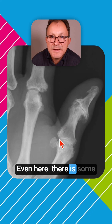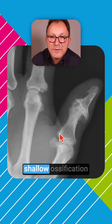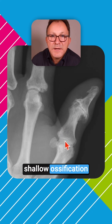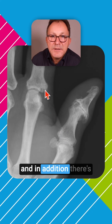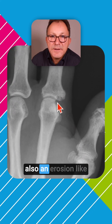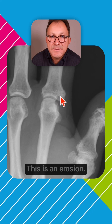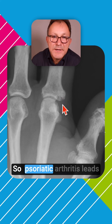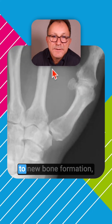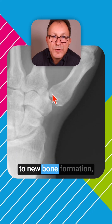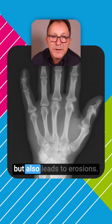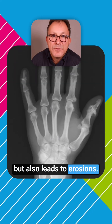Even here there is some shallow ossification. In addition, there is also an erosion — as in our second case, this is an erosion. So psoriatic arthritis leads to new bone formation, but also leads to erosions.